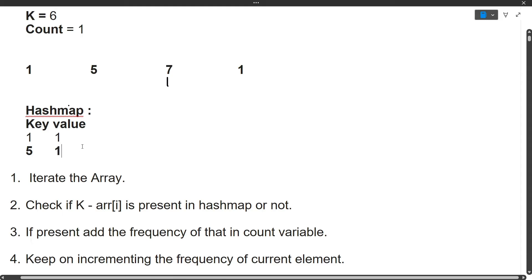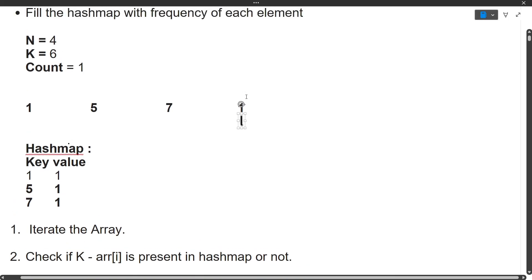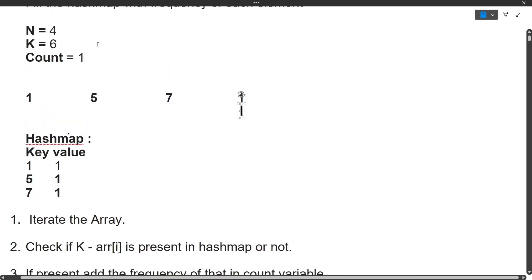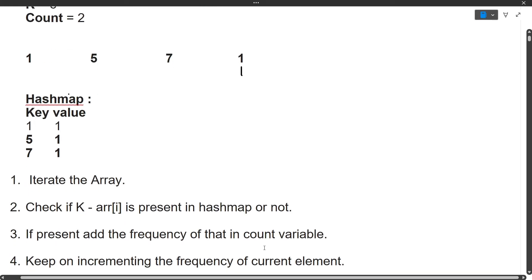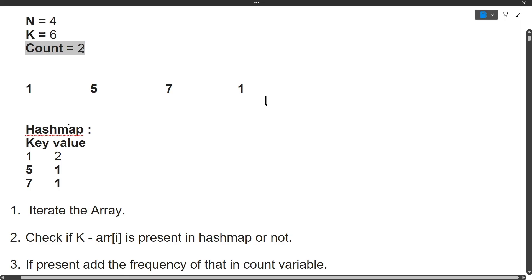Now current element is 7. We check if 6 minus 7 — that is minus 1 — is present in the HashMap. It is not, so we skip to the fourth point and add 7 to the HashMap with frequency 1. Now the last element is 1. We check if 6 minus 1 equals 5 is present in the HashMap — yes, 5 is present. So count is incremented by frequency of 5, which is 1: count becomes 2. We also increment the frequency of 1 to 2. Iteration is over; count is 2, which is our answer.